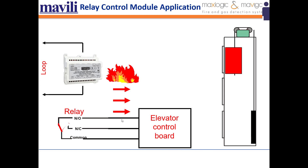For elevator control, the relay control module is connected to the loop line and the controlling equipment is the elevator control board. In case of fire, you can send the elevator to the ground floor, to the nearest floor, or to a desired floor, provided the elevator control board has relays.